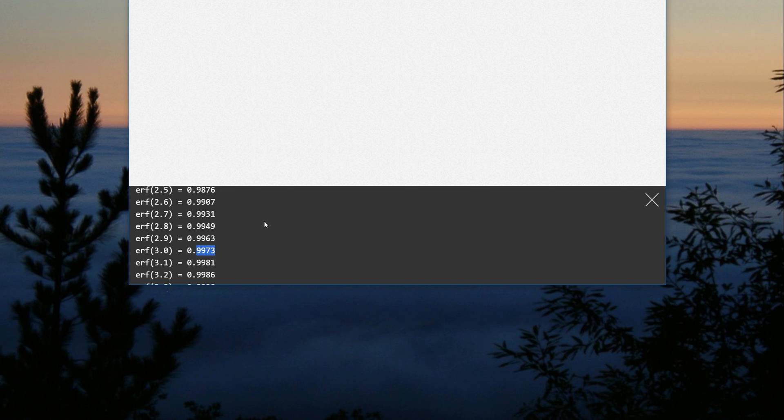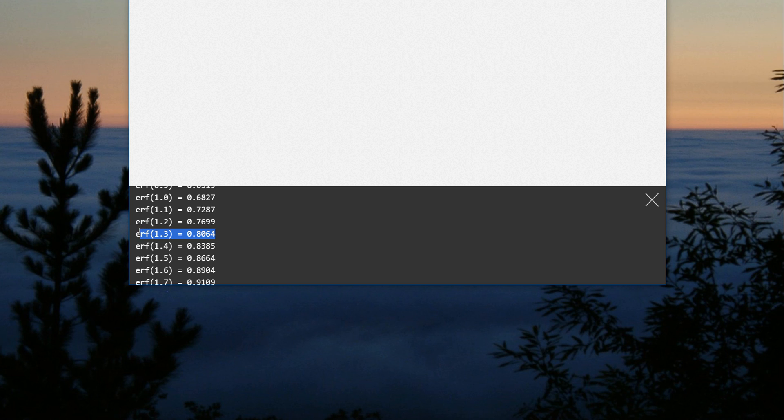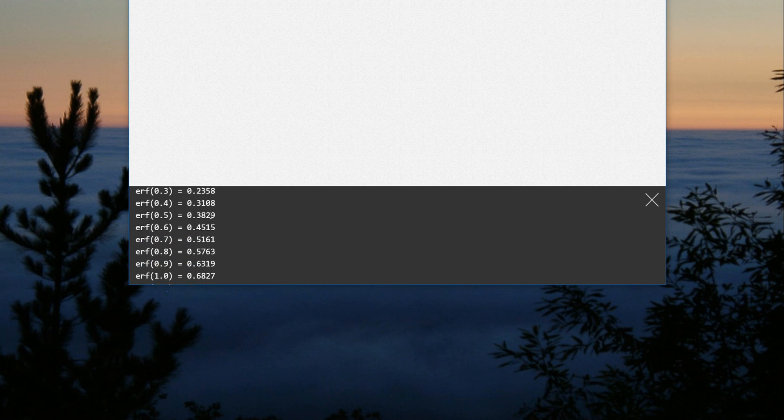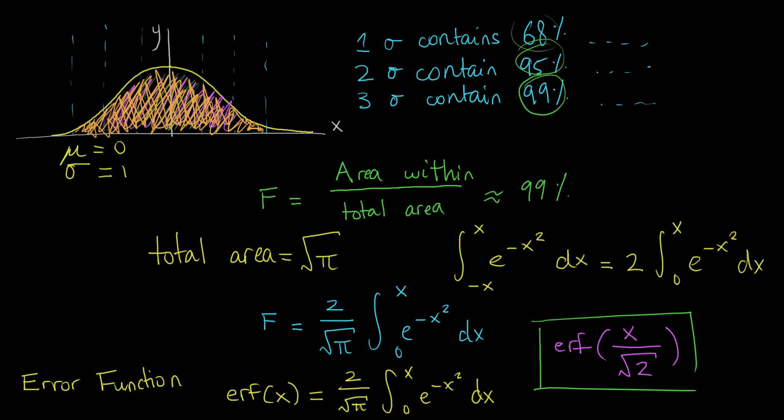So you have all these different ERF values that we know, but how much data is within 1.3 standard deviations of your mean? 80.64%. So if you want a little list, here it is, and you can program it for yourself if you feel like it, but that is the ERF function, and hopefully that helps you understand a little bit better why you have these maybe hard-to-pin-down numbers for how much data is within a certain number of standard deviations of your mean in a normal distribution.